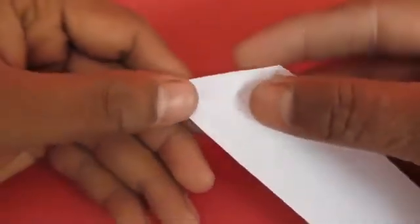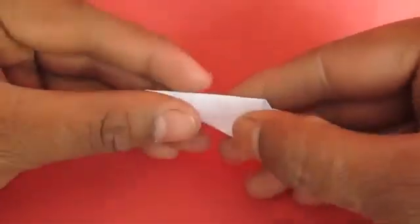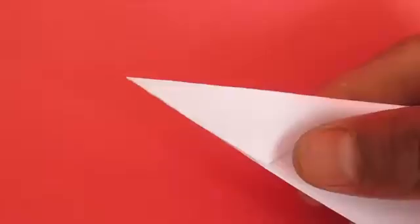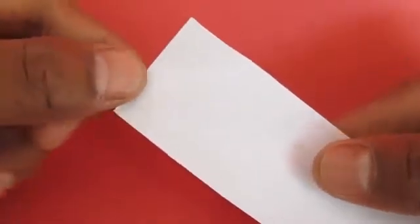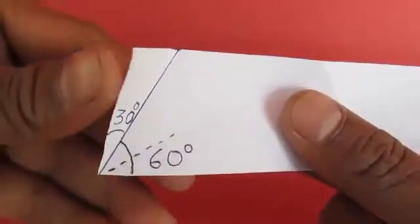On one end divide the strip in 3 equal parts so that you can see an angle of 30 degrees. This is because we divided the 90 degrees at the end in 3 equal parts.